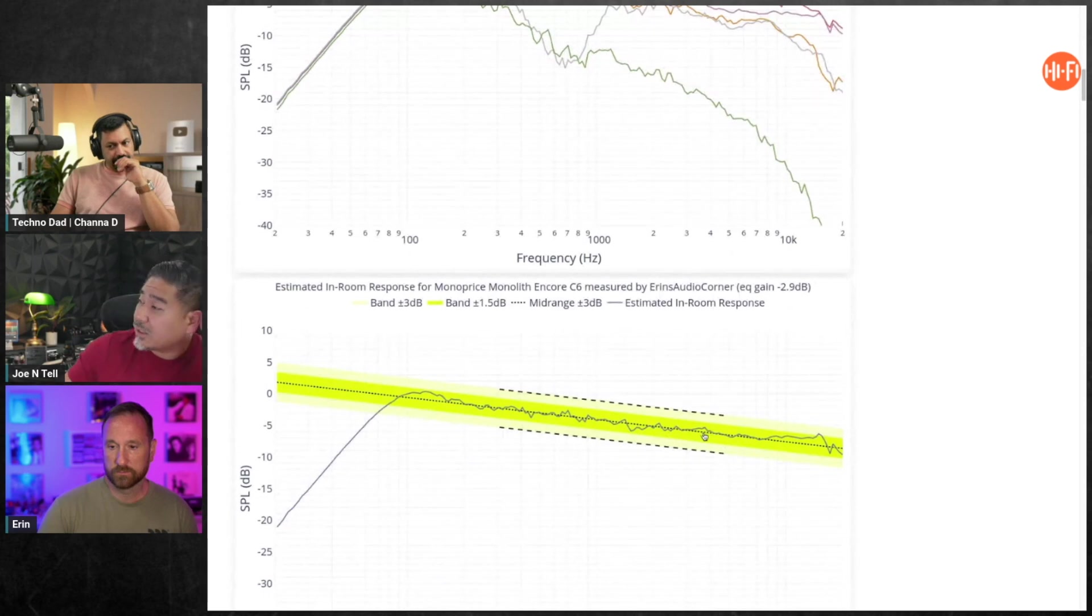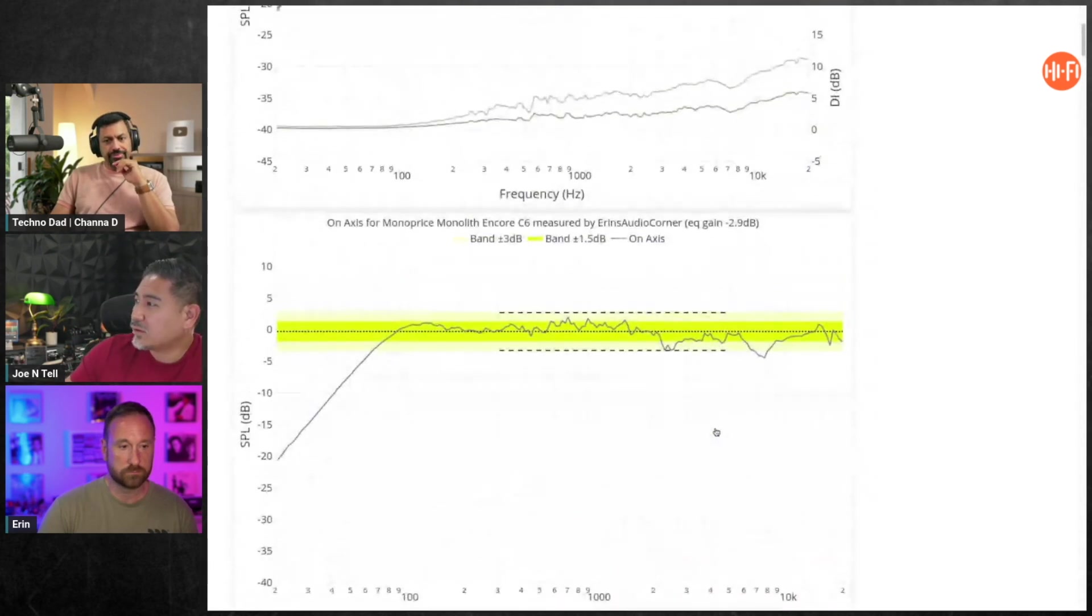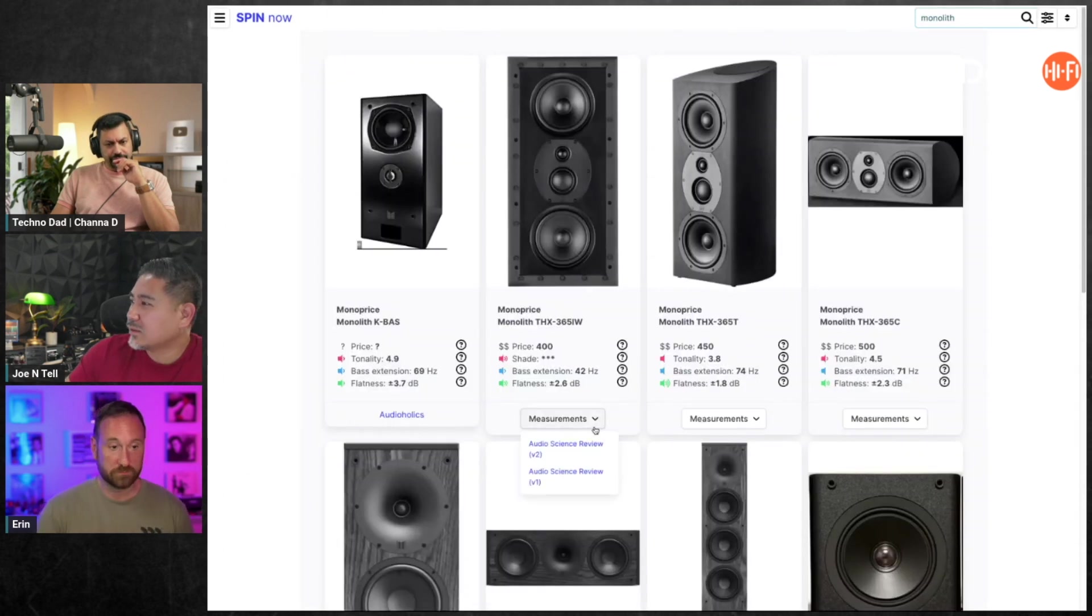So once this is EQ'd, you can expect something like this. Let me see. And this is the predicted in-room response. I think this is a good one. This doesn't look that good though. Hold on, this on-axis doesn't look so hot. You see this other one?